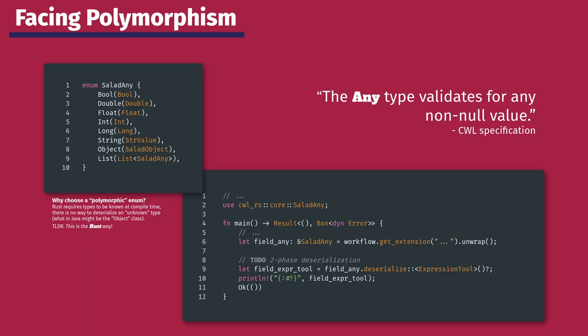The trickiest type to implement in this extension was Any. From the Common Workflow Language specification, the Any type validates for any non-null value. Rust, however, requires types to be known at compile time, and there is no way to deserialize an unknown type. Therefore, we chose to use an enum because it can hold a value for each of its variants. As you can see on line 2, we have a bool that contains the actual boolean value, true or false, and on line 8, the object which contains a Salad object.